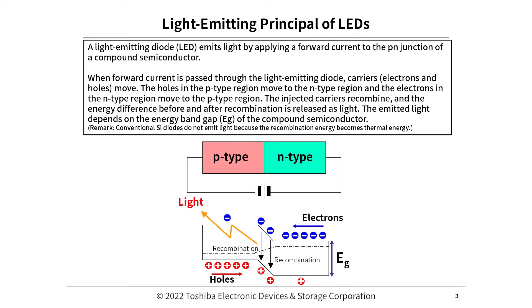Light Emitting Principle of LEDs. A light-emitting diode (LED) emits light by applying a forward current to the PN junction of a compound semiconductor. When forward current is passed through the LED, carriers — electrons and holes — move. The holes in the P-type region move to the N-type region and vice versa. The injected carriers recombine, and the energy difference before and after recombination is released as light. The emitted light depends on the energy band gap (e.g.) of the compound semiconductor. Note: conventional silicon diodes do not emit light because the recombination energy becomes thermal energy.